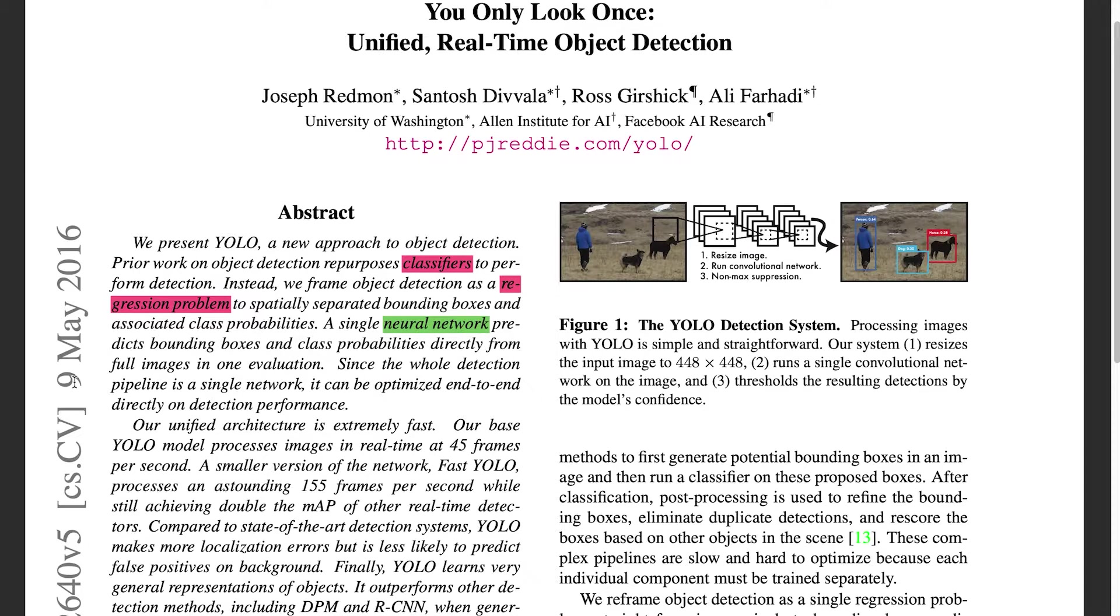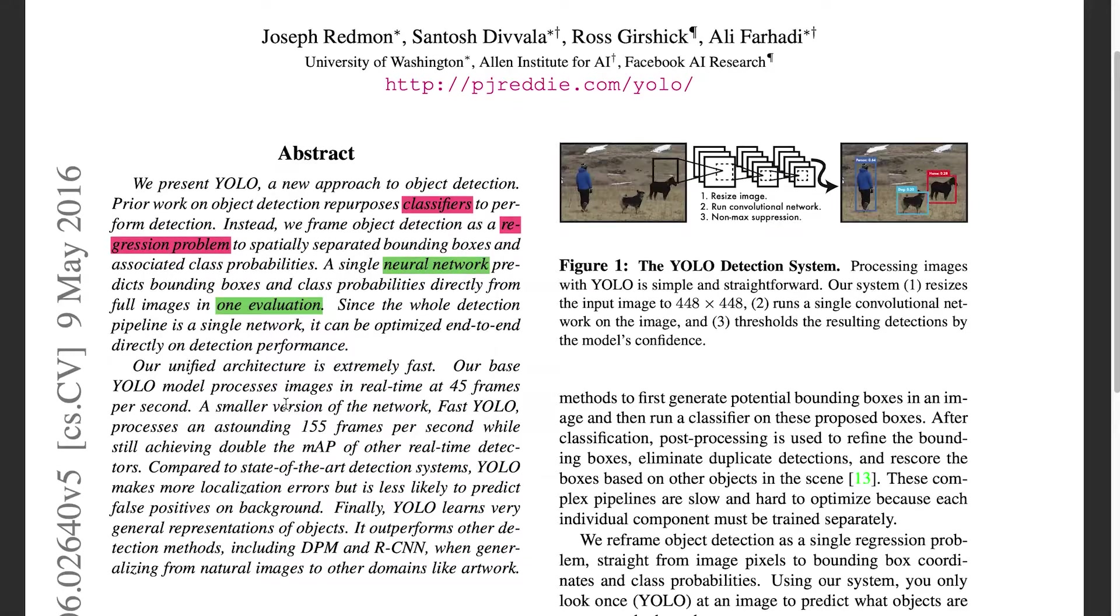Predicts bounding boxes and class probabilities directly from full images in one evaluation. One evaluation is important. Since the whole detection pipeline is a single network, it can be optimized end-to-end directly on detection performance. Our unified architecture is extremely fast. Our base YOLO model processes images in real time at 45 frames per second. 45 frames per second sounds important, I'm going to highlight that.